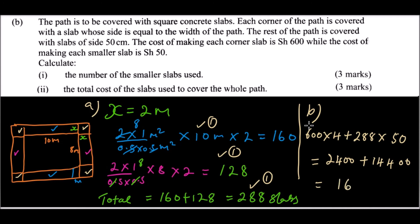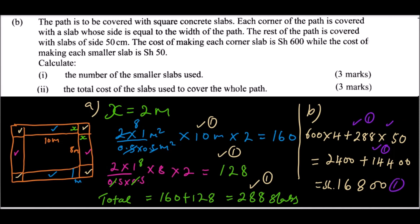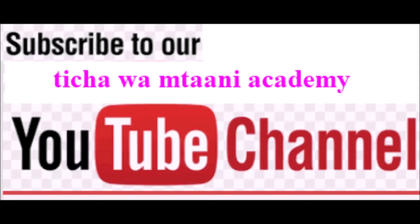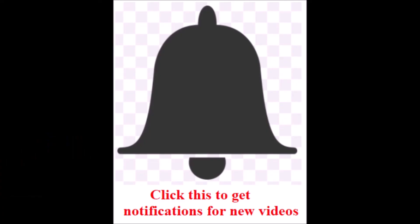Adding the two costs: 2,400 plus 14,400 equals 16,800 shillings. That is the total cost of slabs to cover the path. You get two marks for the cost calculation and one mark for the answer, totaling three marks for the cost part. Part a carried four marks and part b carries six marks, so you should be able to score ten marks, which is the maximum for the whole question.